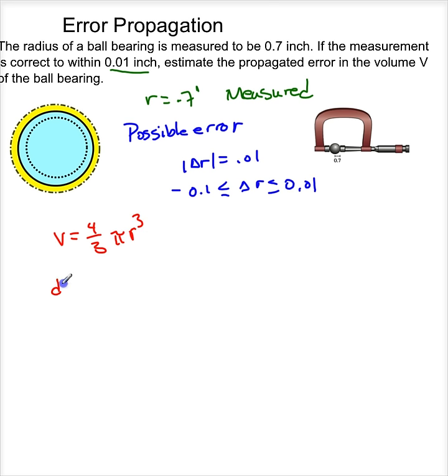So I know dV/dr is 4 pi r squared. So I know dV is equal to 4 pi r squared dr.